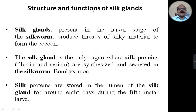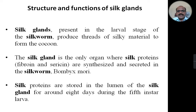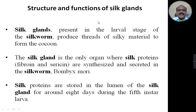Silk glands present in the larval stage of a silkworm produce threads of silky material to form a cocoon. The silk gland is the only organ where silk proteins, fibroin and sericin, are synthesized and secreted in the silkworm Bombyx mori. Silk proteins are stored in the lumen of the silk gland for around eight days during the fifth instar larvae, and these silk glands play a very important role in the spinning function, giving silk threads and forming a cocoon around the fifth instar, which then becomes the pupa inside the cocoon.